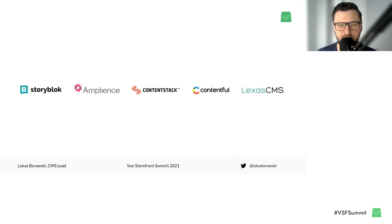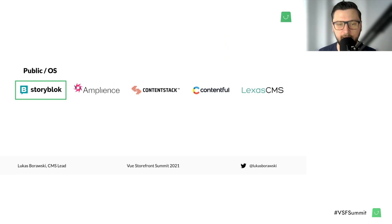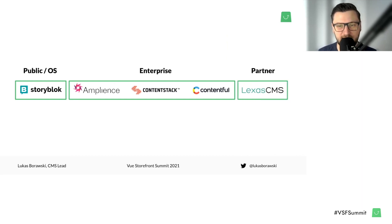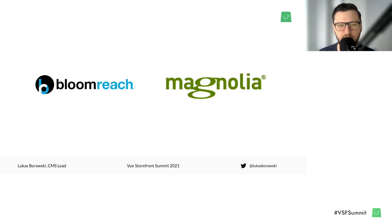Right now we have integrations with several CMSs. The integration with Storyblok is our open source, public integration — you can grab and use it for your application right away. The integrations with Amplience, ContentStack, and Contentful are part of our enterprise package, so if you want to use those, you need to contact our sales team. We also have an integration with LexaCMS, which is built by our partner LexaCMS — it's also built on top of the common pattern from our public API using the useContent composable, and it is also public. We are not stopping — we are currently working on integrations with Bloomreach and Magnolia, so stay tuned for further information as they will appear very soon.